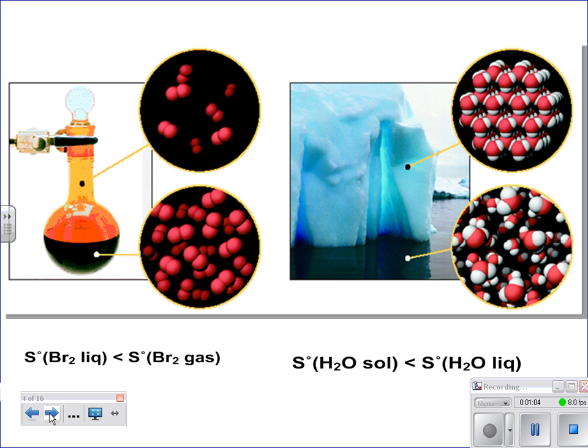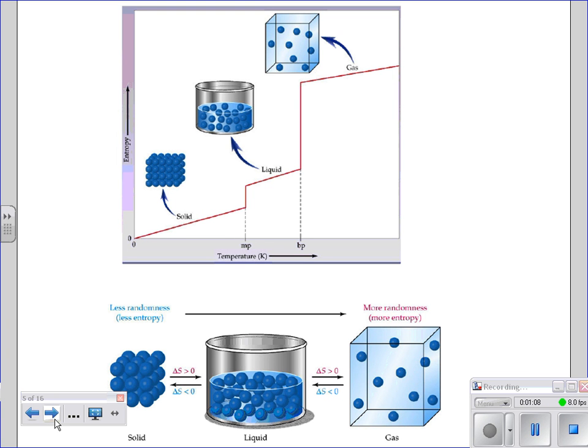So I'm going to skip through most of these examples that we talked about in class. But here you can just visually see between a solid, liquid, and gas what happens to be most disordered.